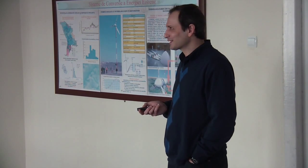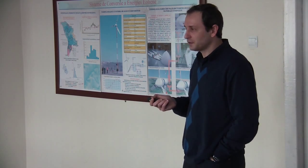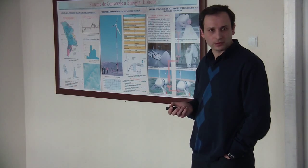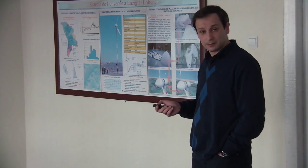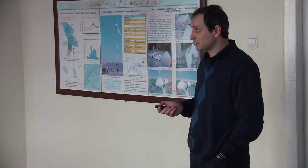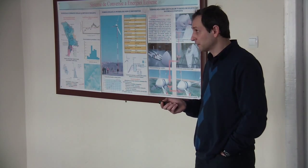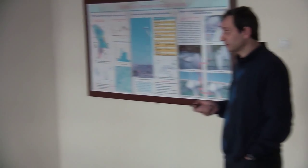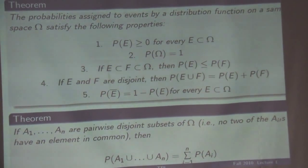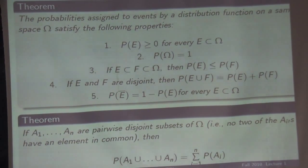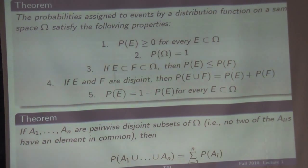You should know what union, intersection, complement, and Venn diagrams are. Here is a very useful theorem: probability of any event is greater than or equal to 0; probability of the whole sample space is 1; if E is a subset of F, then P(E) ≤ P(F); if E and F are disjoint — meaning empty intersection, no common points — then probability of the union is the sum of probabilities; and probability of the complement is 1 minus P(E). All these properties are very useful.